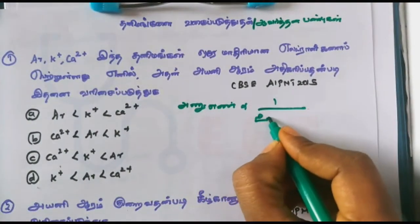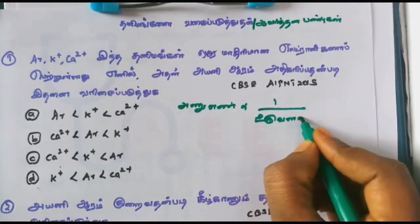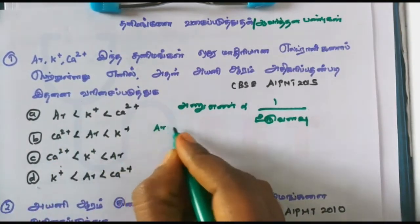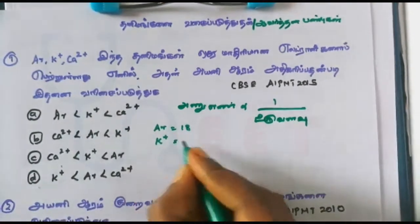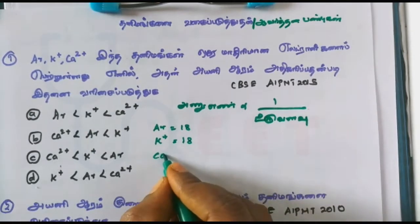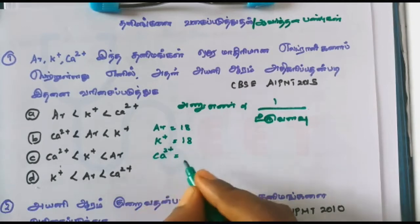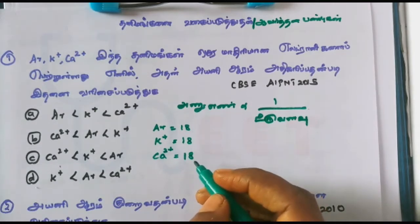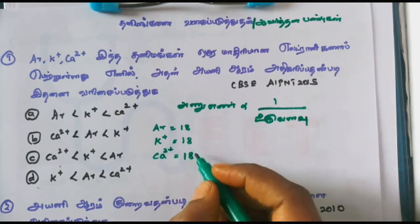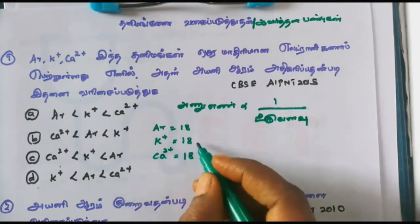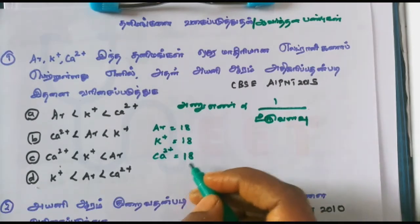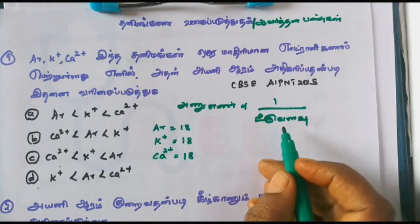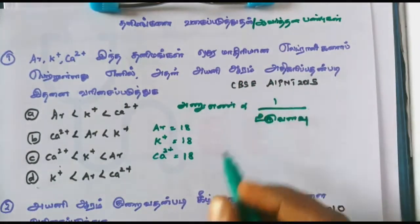Argon has 18 electrons. Calcium is element 20 and loses 2 electrons, giving it 18 electrons. So the electrons are the same — calcium ion has 18 electrons, same as argon.